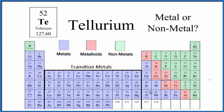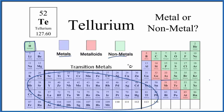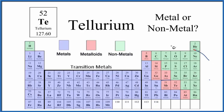We see that on the left-hand side here, these are all metals, with the exception of hydrogen. Hydrogen is considered a nonmetal. We have our metals over on the left-hand side, and then on the right-hand side here, these are the nonmetals.